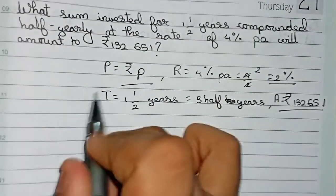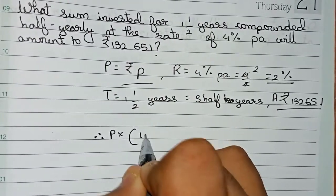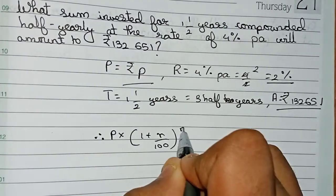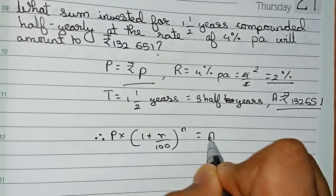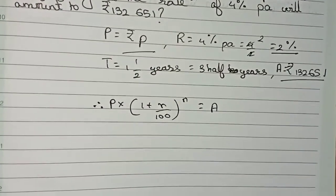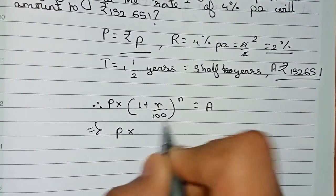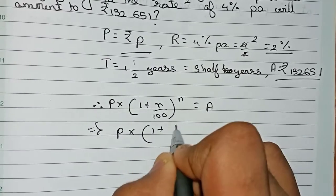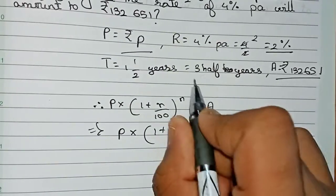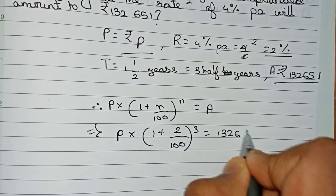Now write the compound interest formula: A = P × (1 + R/100)^n. We have to find the value of P. Substituting the values: P × (1 + 2/100)^3 = 1,33,651.